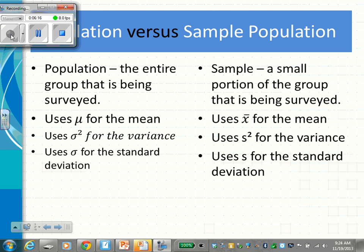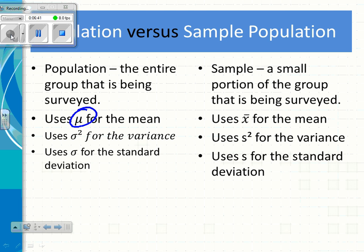For a sample, you might see X-bar — an X with a bar over it — which means the mean. For a population, use mu; for a sample, use X-bar. They both mean the mean, the average — same thing. For variance, sometimes you see sigma squared and sometimes S squared, but they both mean variance. For standard deviation, sometimes you use S — I remember S for sample — and sigma is for the population standard deviation.